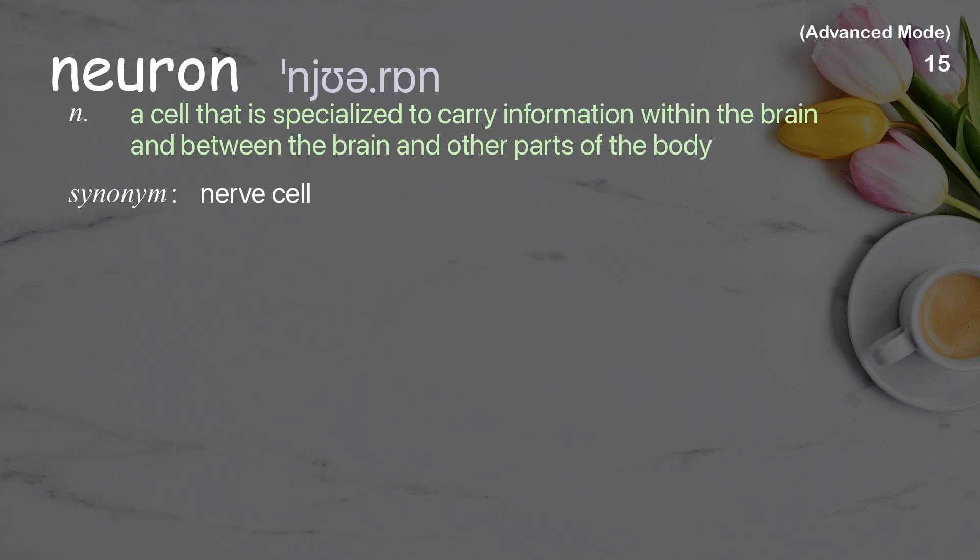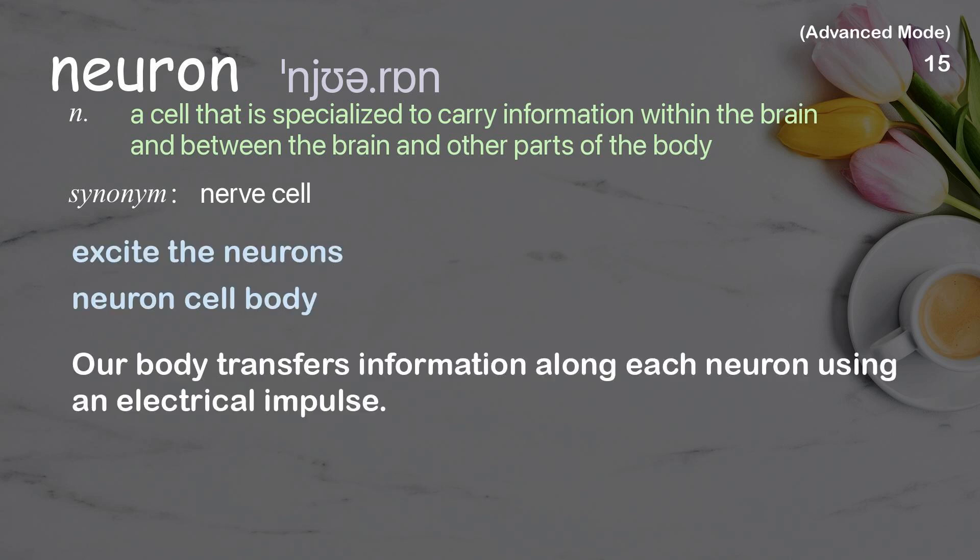Neuron: a cell that is specialized to carry information within the brain and between the brain and other parts of the body. Examples: excite the neurons, neuron cell body. Our body transfers information along each neuron using an electrical impulse.